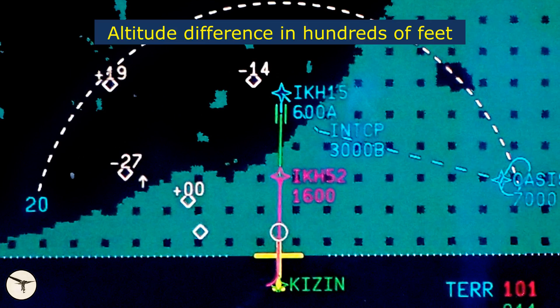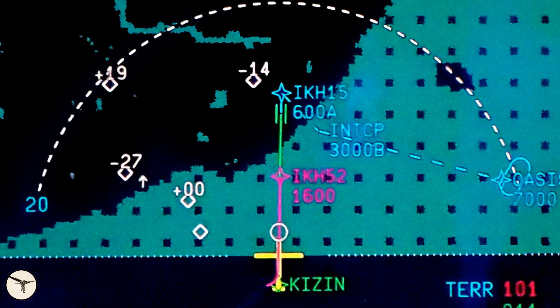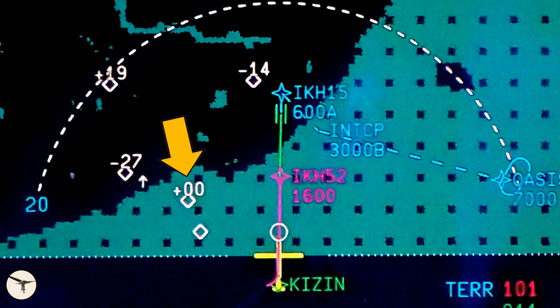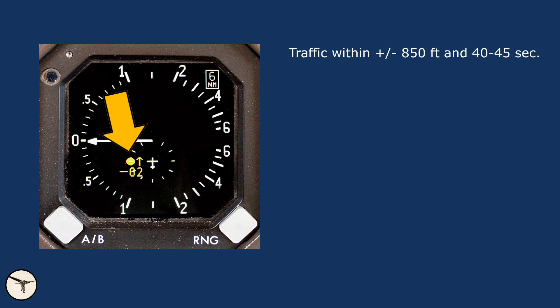On this screenshot we can see traffic above and below us. One aircraft is climbing and the others are maintaining altitude. The diamond without altitude report might be a VFR flight without Mode C, which is the altitude reporting — it can also be a Navy vessel. One aircraft is maintaining the same altitude as us. If this aircraft comes within plus or minus 850 feet and 40 to 45 seconds from us, the symbol changes to a yellow circle and a Traffic Advisory, TA, is issued.